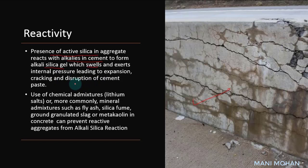The image shown here is deterioration of concrete due to alkali-aggregate reaction, caused by the presence of active silica in aggregate. This reacts with alkalis in cement to form alkali-silica gel, which swells and exerts internal pressure leading to expansion, cracking, and disruption of cement paste. A common practice to prevent alkali-silica reaction is the use of chemical admixtures such as lithium salt, or mineral admixtures such as fly ash, silica fume, GGBS (ground granulated blast furnace slag), or metakaolin in concrete.